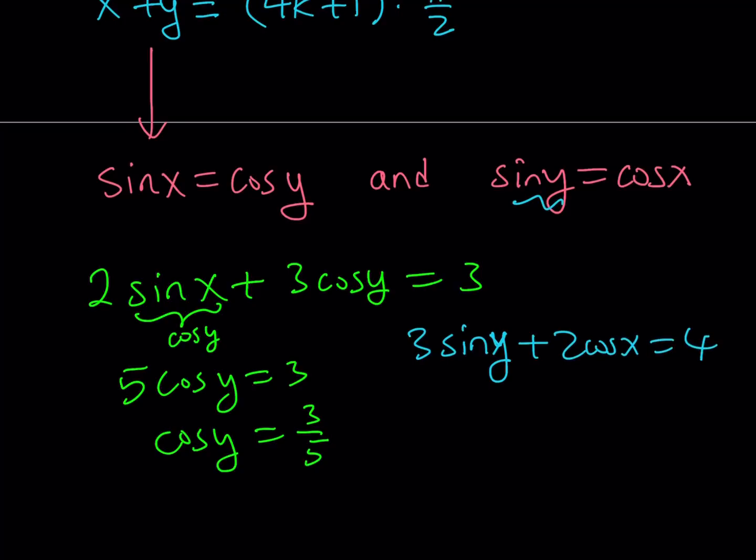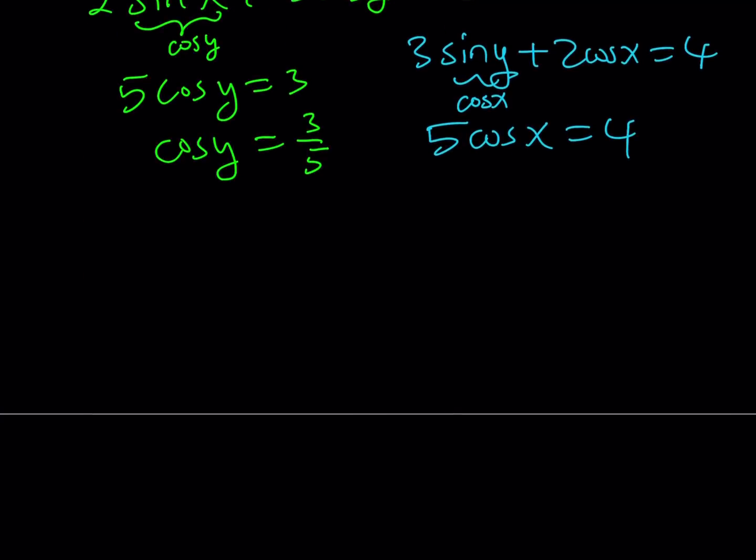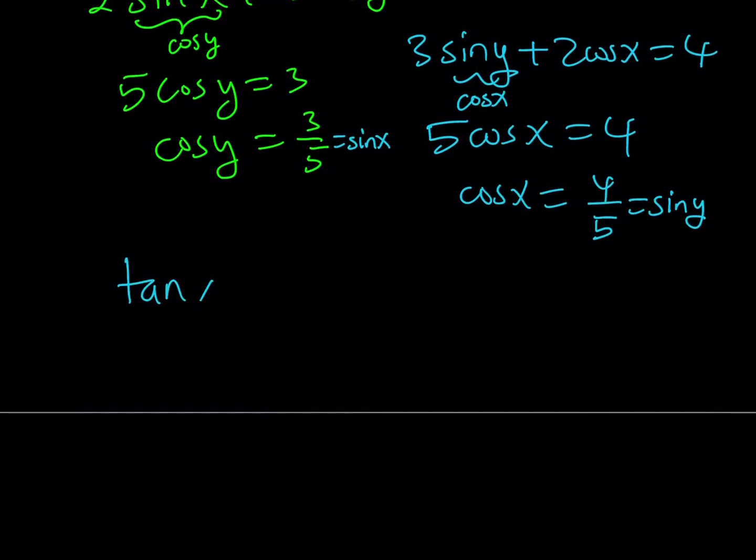Let me fix this so it looks nicer. So in this equation, we can basically replace sine y with cosine x, so we get 5 cosine x equals 4, and that just means that cosine x equals 4 fifths. So we got two different values here. Of course, cosine x is the same as sine y and cosine y is the same as sine x. So all these values are obviously positive, so we can safely say that from here, tangent x is going to be 3 fourths and tangent y is going to be 4 thirds.